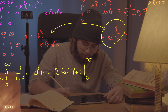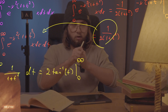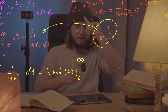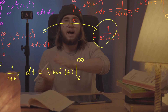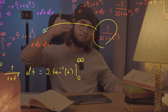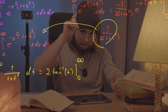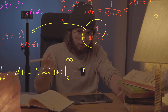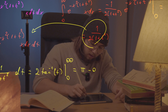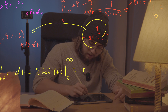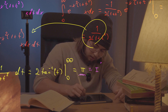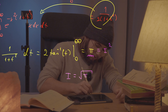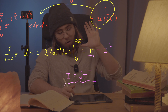We need two times the arctangent of t evaluated from zero to infinity. We know that tangent of pi over two goes to infinity, so the inverse tangent has a horizontal asymptote at pi over two — meaning arctan of infinity equals pi over two. So we get two times pi over two, which is pi. Arctan of zero is zero, so we subtract nothing. Therefore I squared equals pi, which means I equals the square root of pi, exactly as expected.